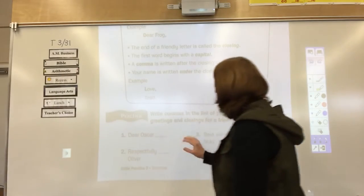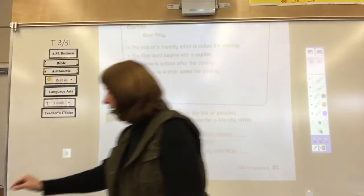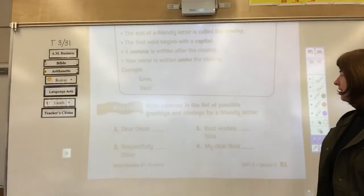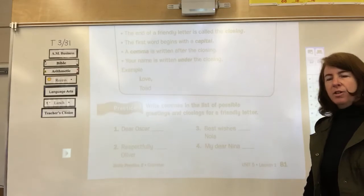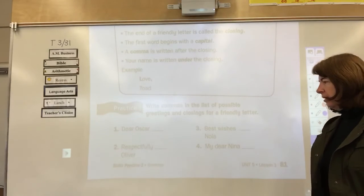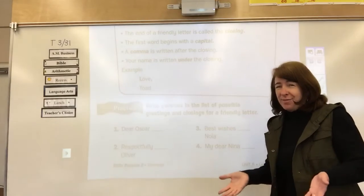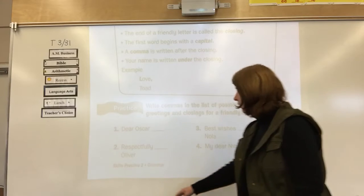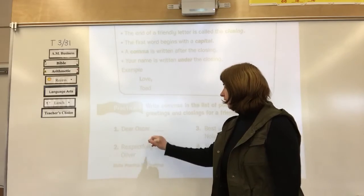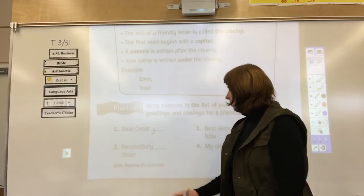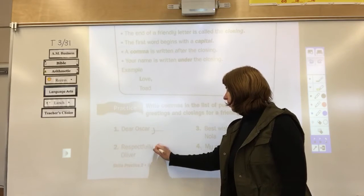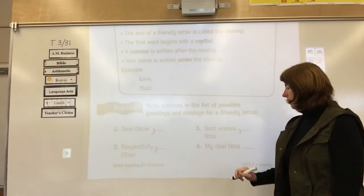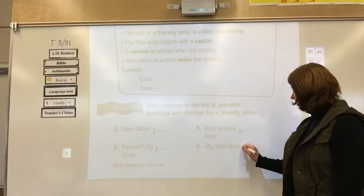You can look back at it later for what to do. But right now, I want you to go ahead and take a look at your practice. It says, write commas in the list of possible greetings and closings for a friendly letter. So this is where you need your pencil. And really they helped you out. All you have to do is put the commas in. We're going to put the commas in and then we're going to talk about it. Okay? So first of all, dear Oscar, comma. Respectfully, comma, Oliver, or best wishes, comma, Nola, my dear Nina, comma.